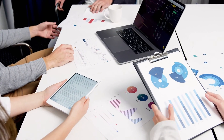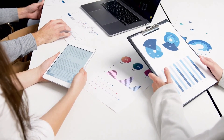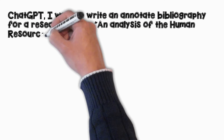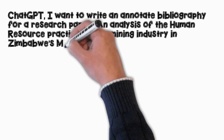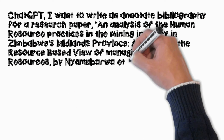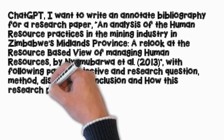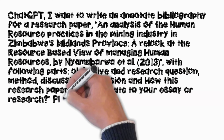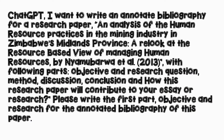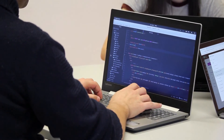In such cases, you can ask ChatGPT or Claude.ai to generate every part separately. For instance, you can use the following prompt to write the objective and research question part: "ChatGPT, I want to write an annotated bibliography for a research paper — 'An Analysis of the Human Resource Practices in the Mining Industry in Zimbabwe's Midlands Province: A Re-look at the Resource-Based View of Managing Human Resources' by Niamh Ubrwa et al. (2013) — with the following parts: objective and research question, method, discussion, conclusion, and how this research paper will contribute to your essay or research. Please write the first part: objective and research question." Then ask to write the method part, and so on. This way, you'll get the best annotated bibliography according to the format provided by your university or college.